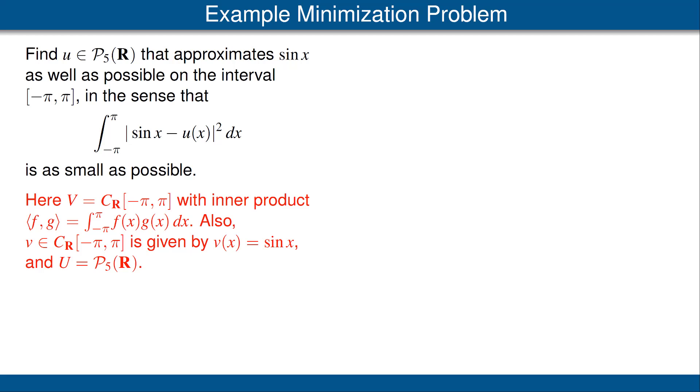To put this in the language of our previous result, we'll let V be the vector space consisting of the continuous real-valued functions on the closed interval from minus pi to pi, with an inner product given as follows. The inner product of two functions f and g is the integral from minus pi to pi of the product of f and g.